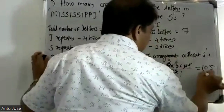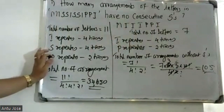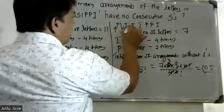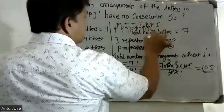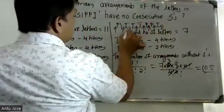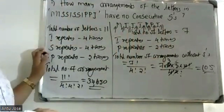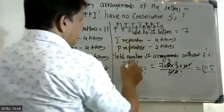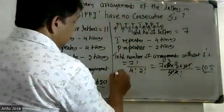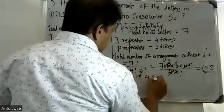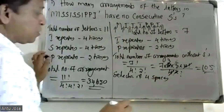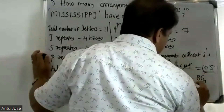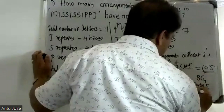Total number of arrangements without consecutive S's. Selection of four spaces from the available positions: ⁸C₄. That gives 1 times 2 times 4 for the selection.